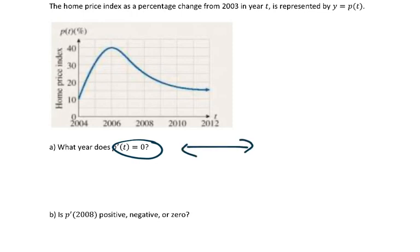So if I look at this graph that's represented up here above, the point at which it has a tangent line that's a horizontal line would be right here, which is the year 2006. So in the year 2006 is when p'(t) is 0, when the derivative is 0.